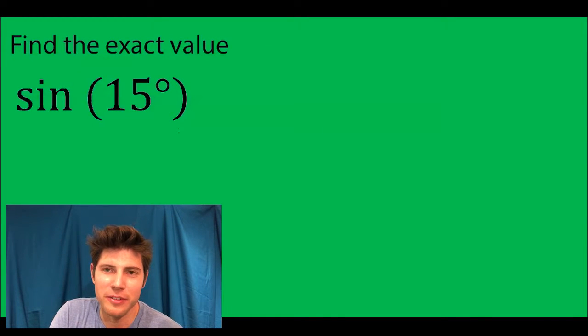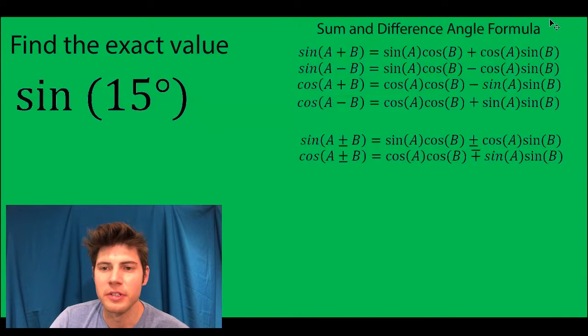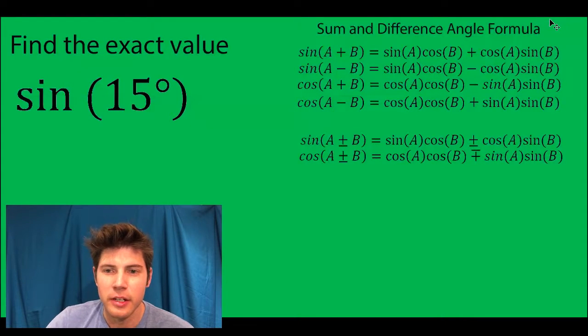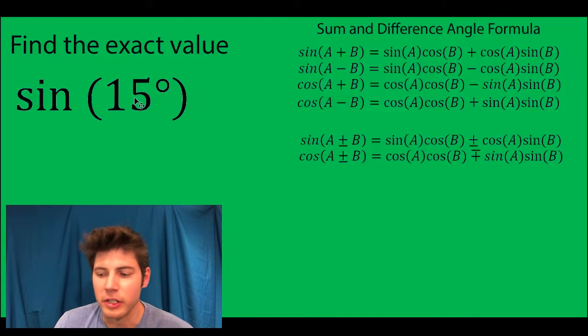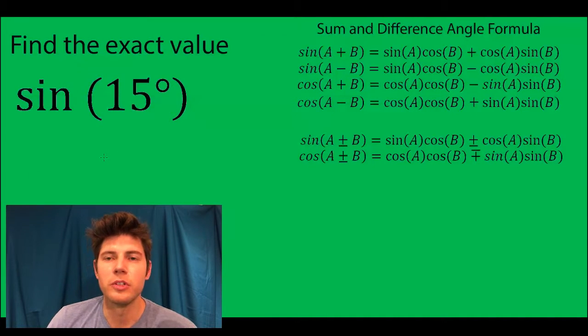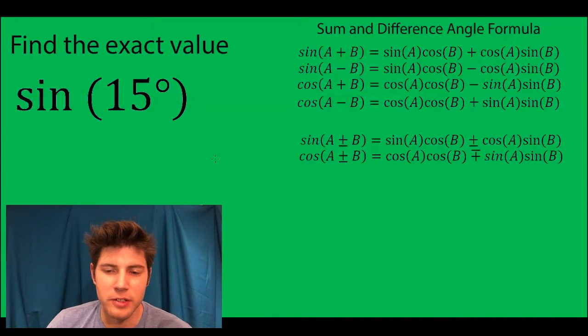Let's find the exact value of sine of 15 degrees. The formulas we're going to use for this are the sum and difference angle formulas. So first off, we're dealing with sine and we need to get 15 degrees with stuff that we already know, so 15 is equal to 45 minus 30.